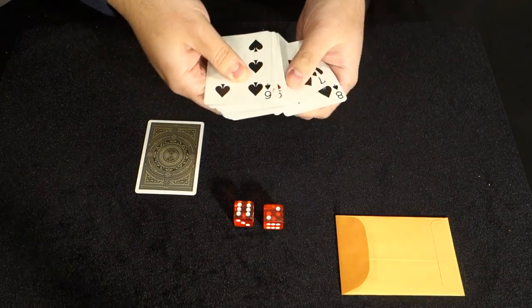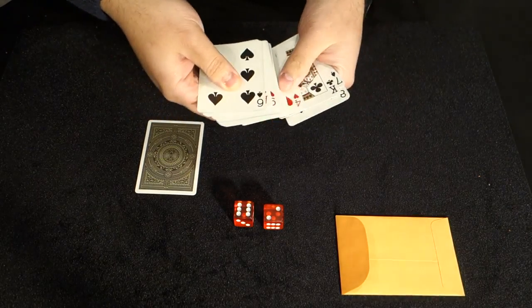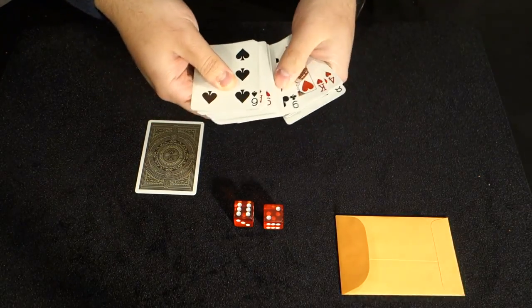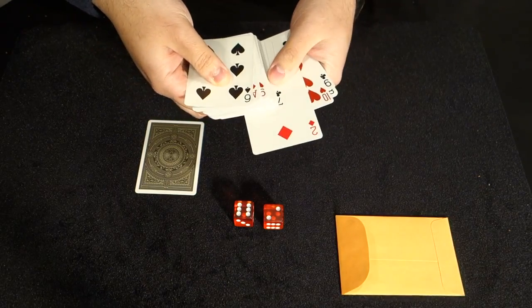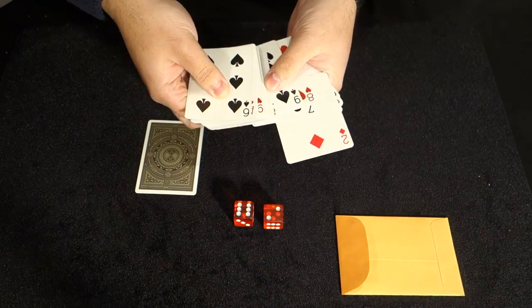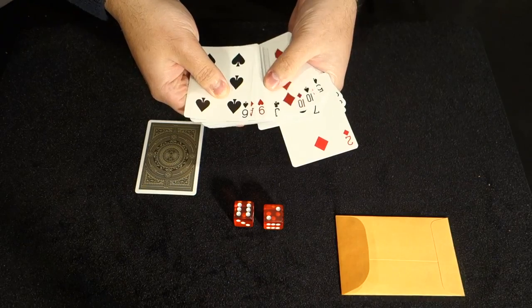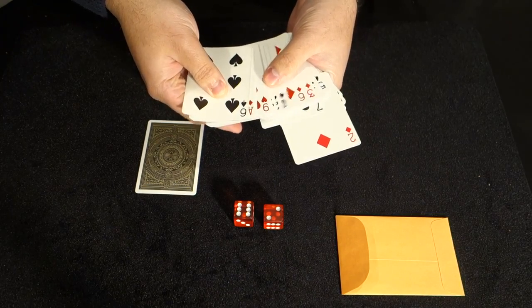So that'd be one, two, three, four, five, six, seven, eight. The two of diamonds. And again, you can confirm there is no other two of diamonds in the deck.